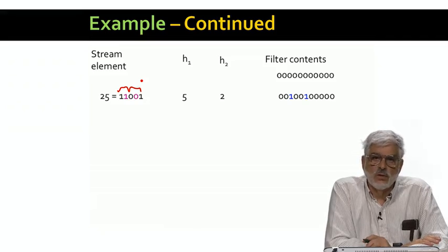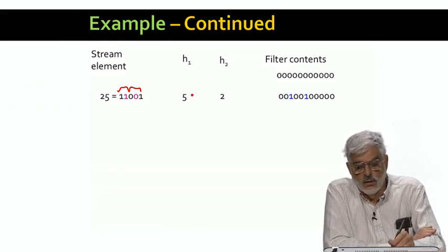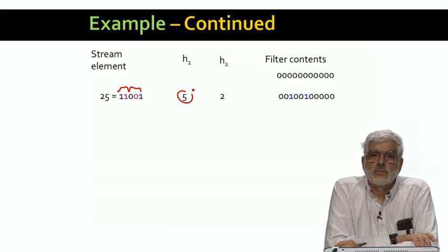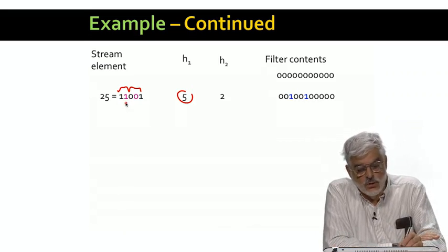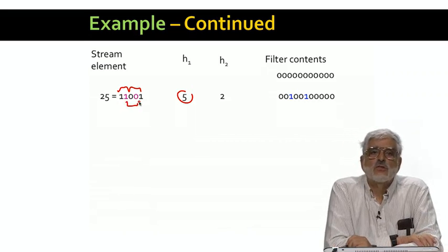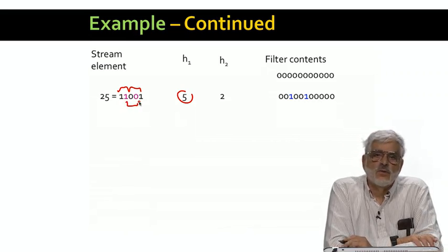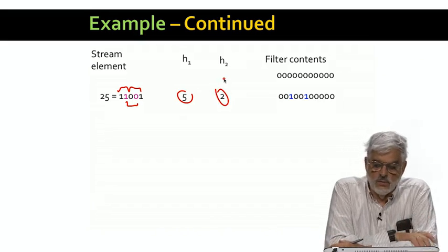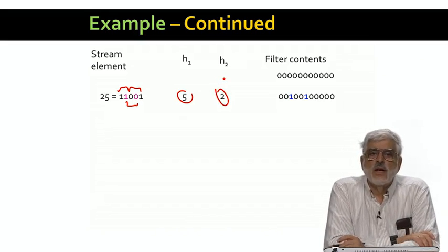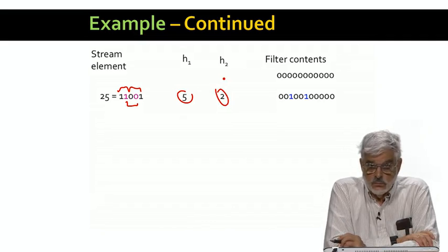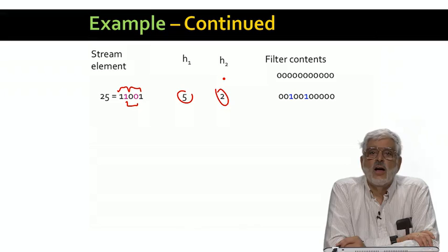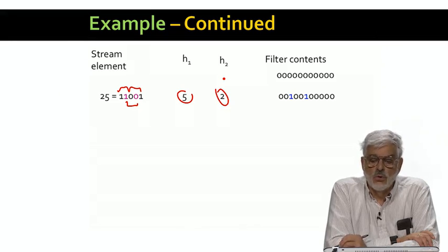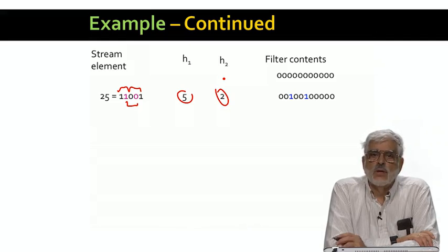That's 5 in binary, and 5 modulo 11 is 5. That's the value of h1. The even positions are 1, 0, and that's 2 in binary. And 2 modulo 11 is still 2, so that's the value of h2. So we therefore set positions 2 and 5 of the array to 1. You see the new values in blue. Note that we're counting positions from the left end, and starting at 0.